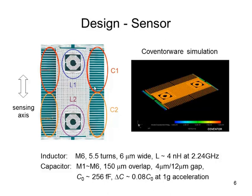The inductor is on the top metal layer with an inductance of about 4 nanohenry at the oscillation frequency. The capacitor is made of a stack of all the metal layers. This is the overlap length.